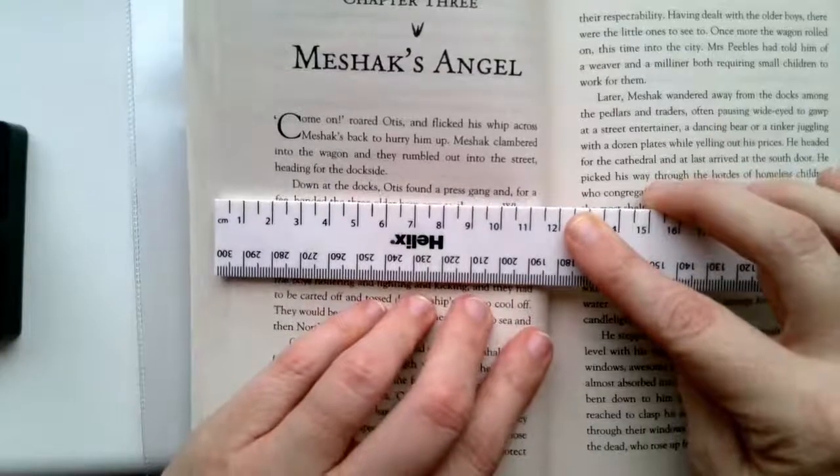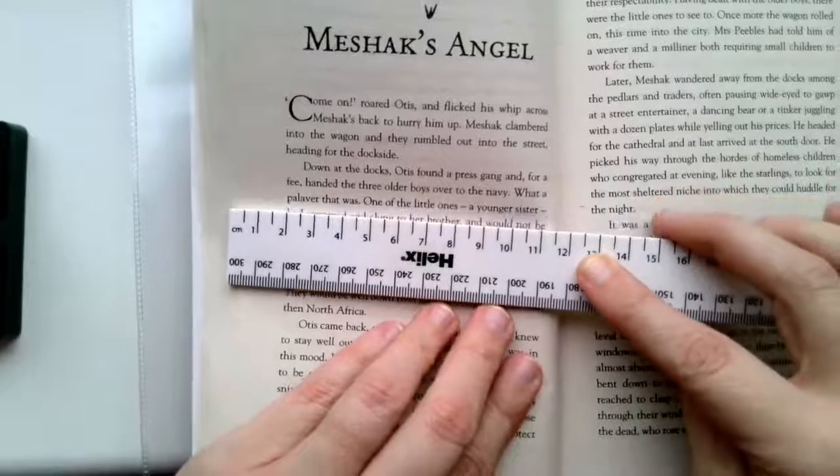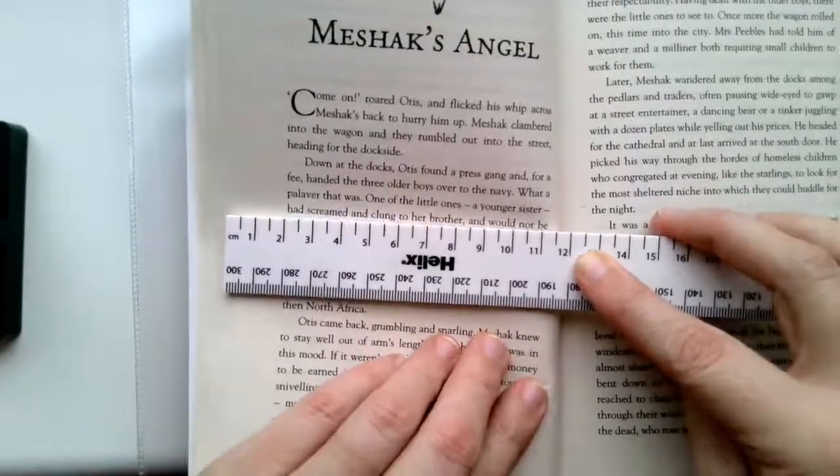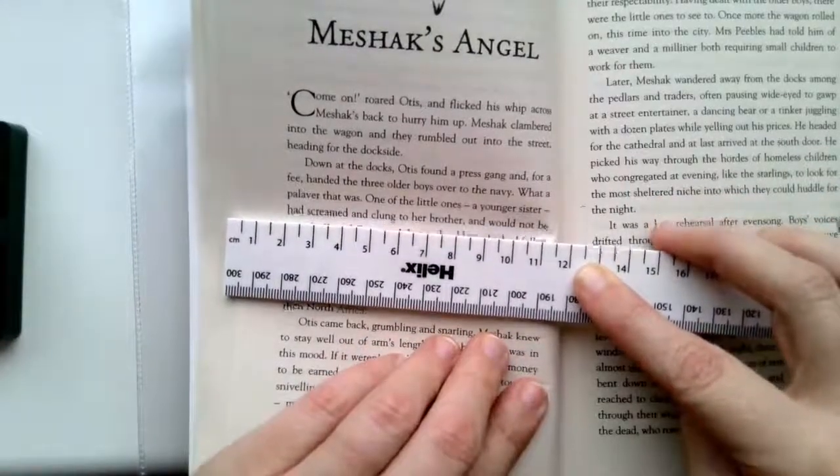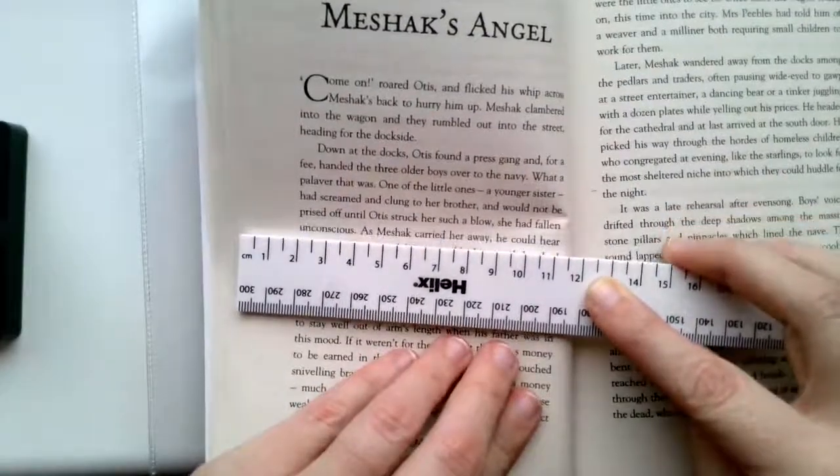Down at the docks, Otis found a press gang and, for a fee, handed the three older boys over to the navy. What a palaver that was! One of the little ones, a younger sister, had screamed and clung to her brother and would not be prized off until Otis struck her such a blow she had fallen unconscious.